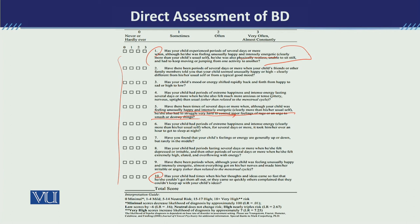In this way, items are asked repeatedly so that we can get an idea of whether the child has any mood disorder or bipolar problem. All items are rated, and based on the total scoring, the level of the problem — whether it is mild, moderate, or severe — is identified.